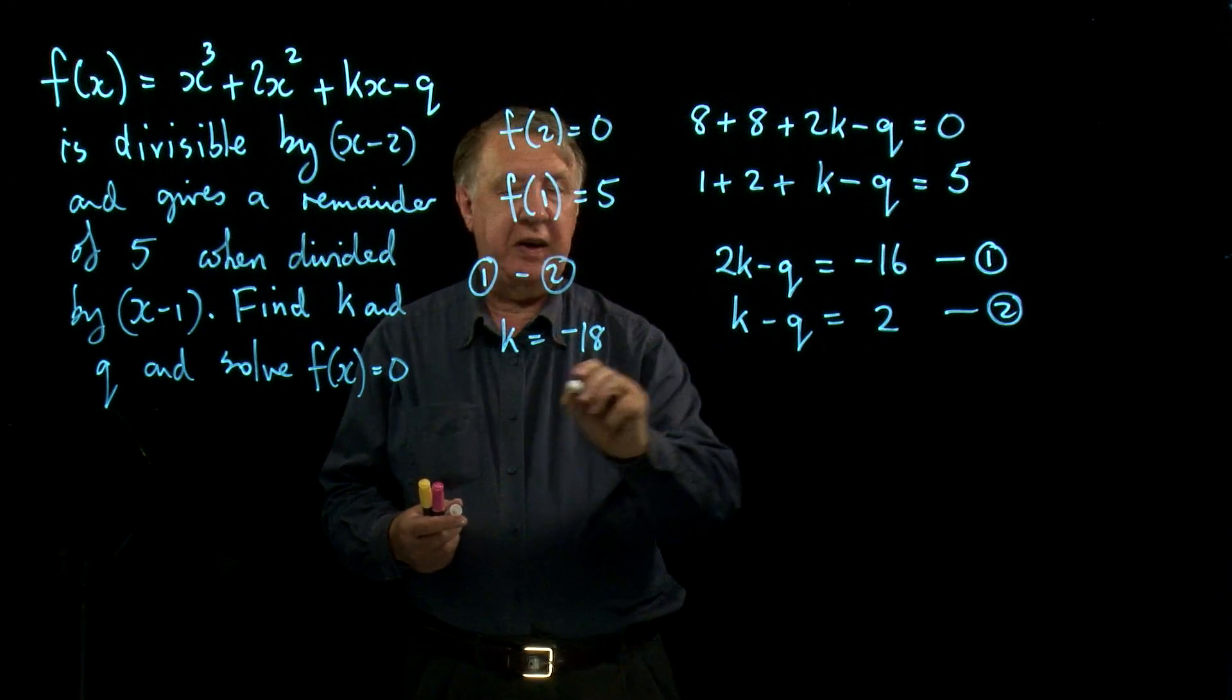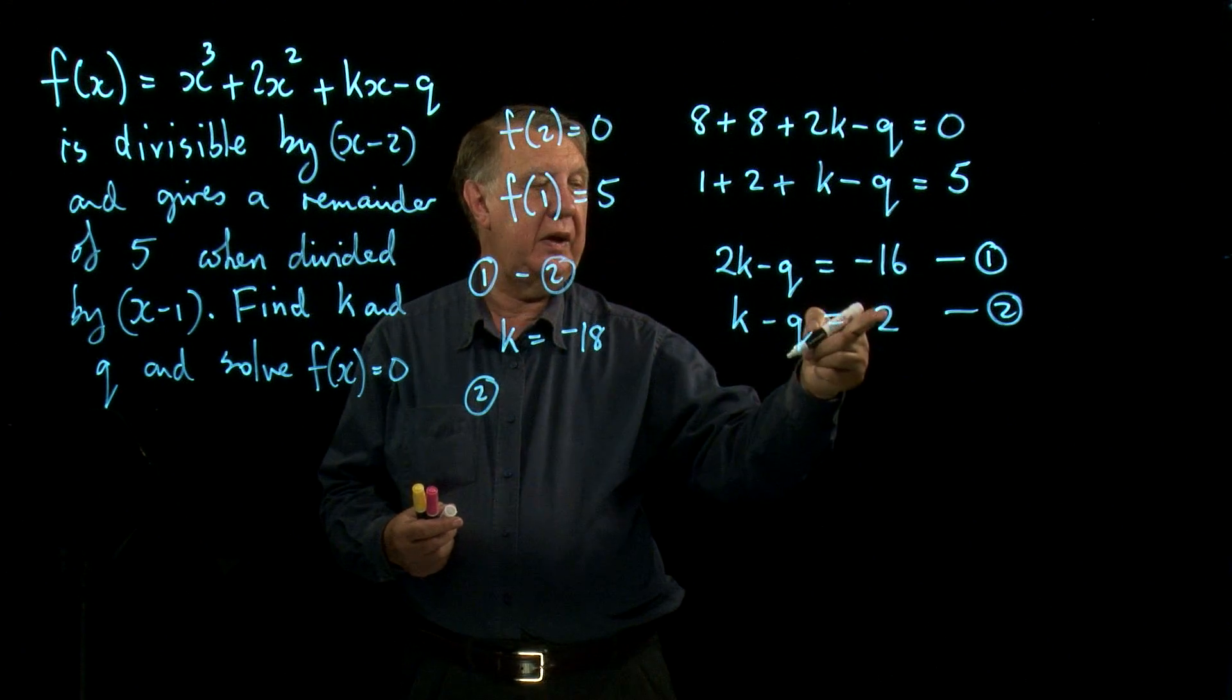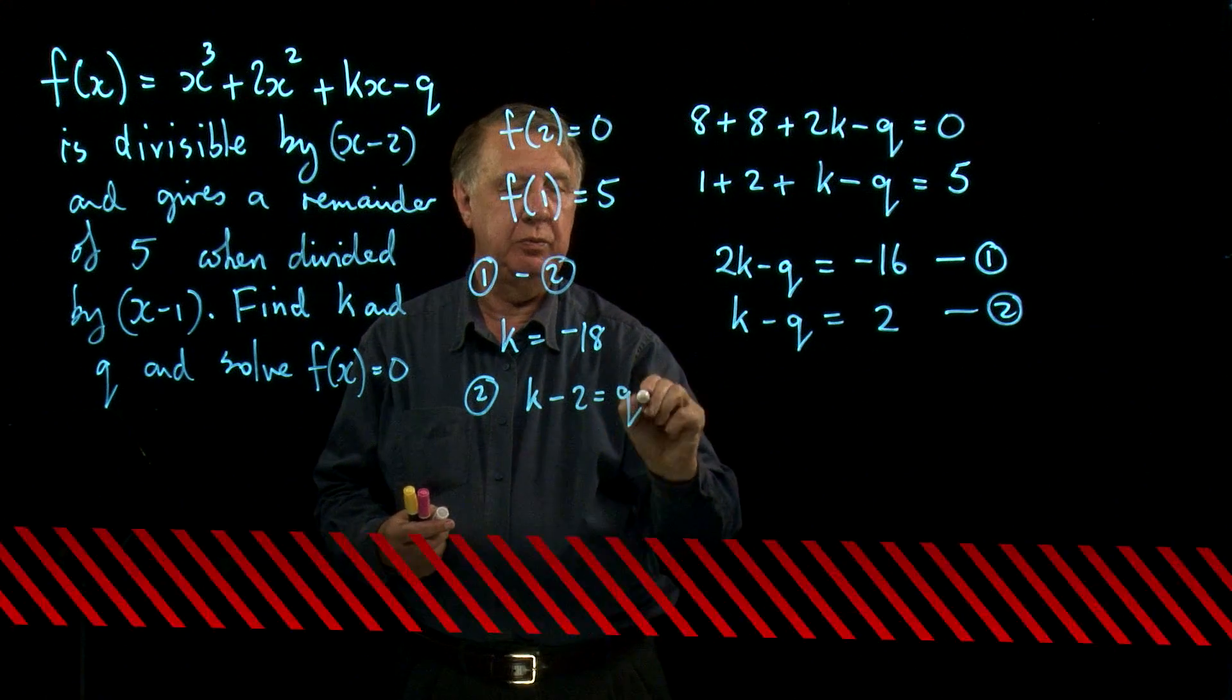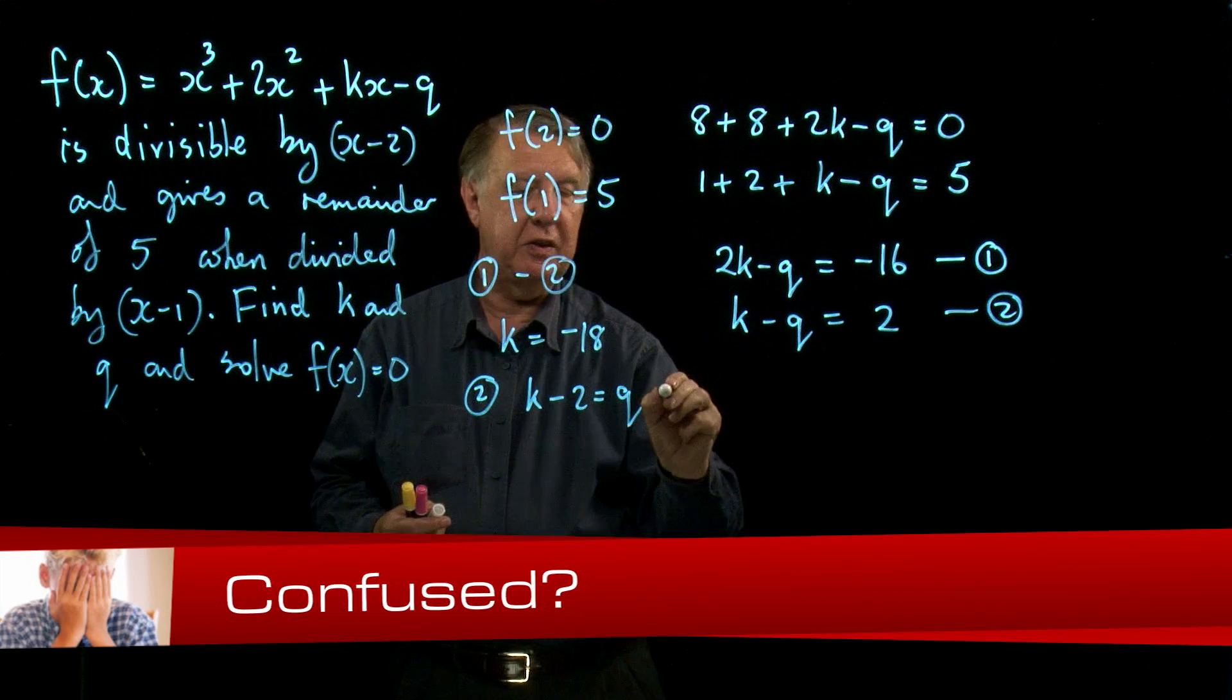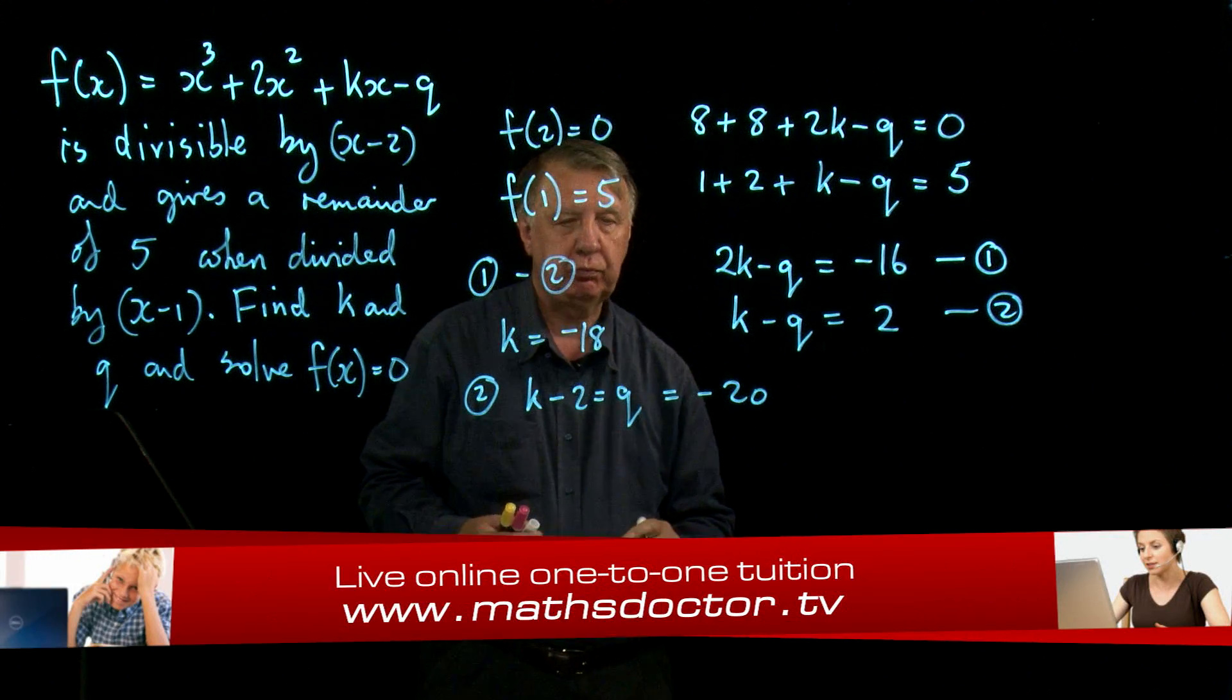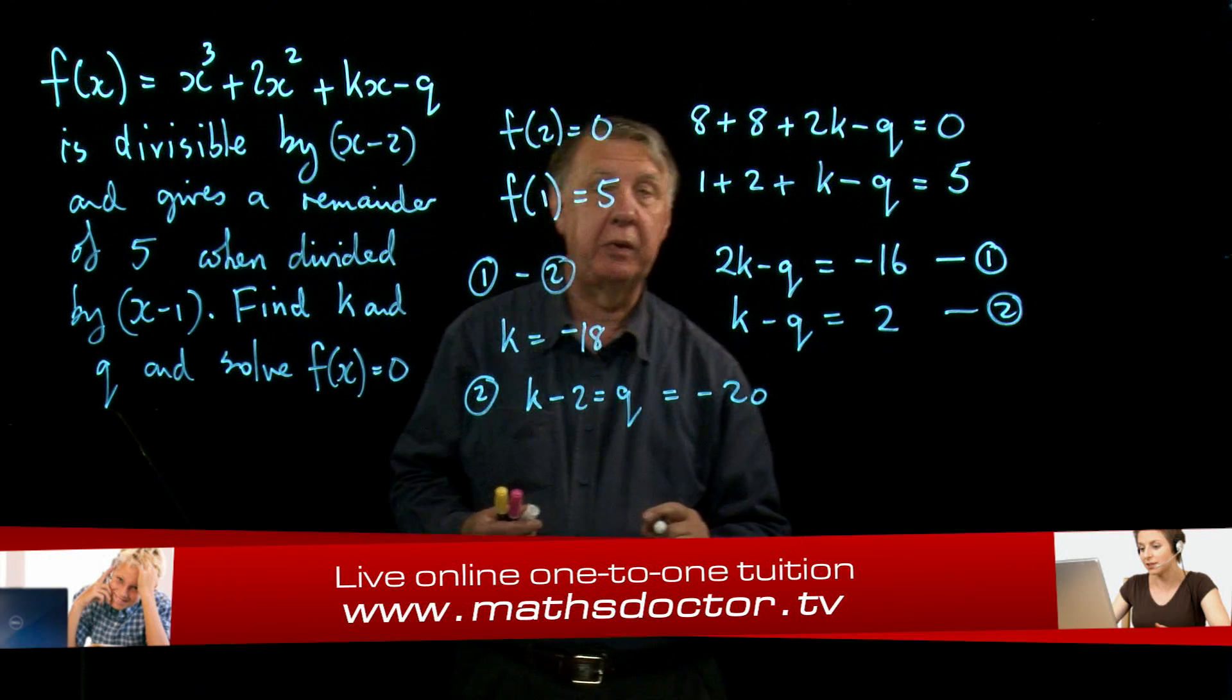From the second one, put q over there, k minus two equals q. k is minus 18, so q is minus 20. So I've done the first bit, no hassle.